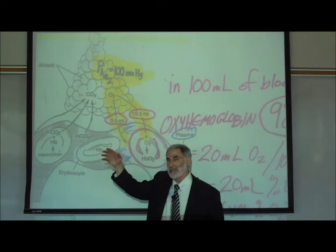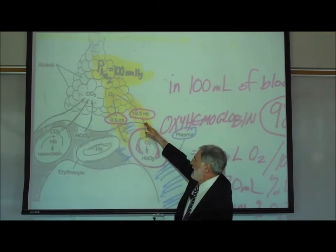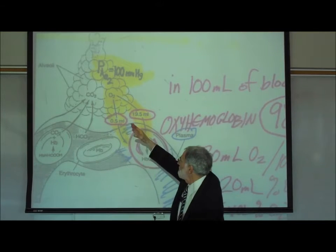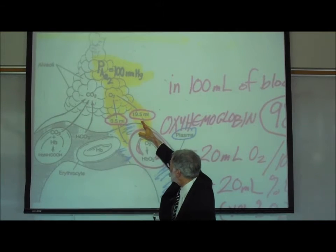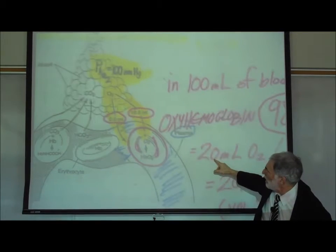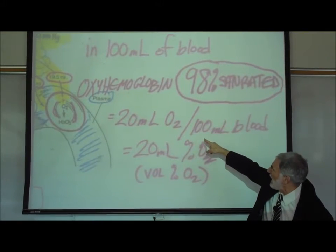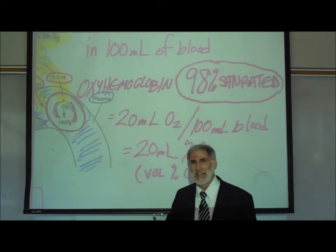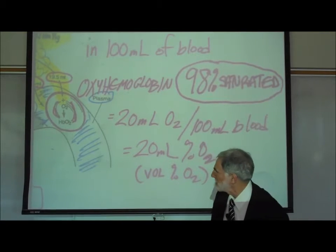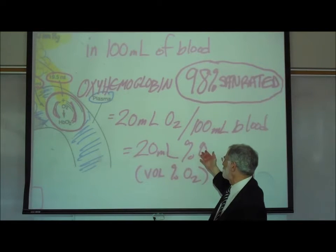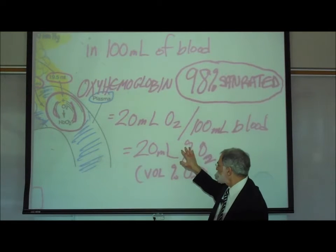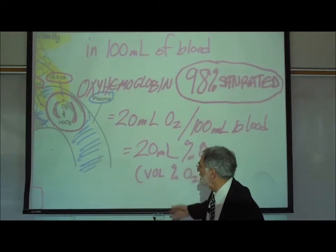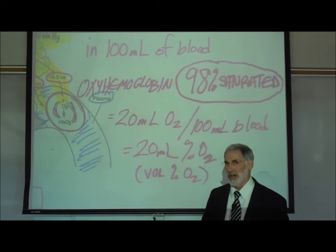There is a half a milliliter of oxygen dissolved in the plasma and 19.5 milliliters of oxygen inside the red blood cells, so 0.5 plus 19.5 is a total of 20 milliliters of oxygen normally found in every 100 milliliters of blood that has gone through the lungs. This is also referred to as 20 milliliters percent oxygen, commonly called the volume percent oxygen of the blood.